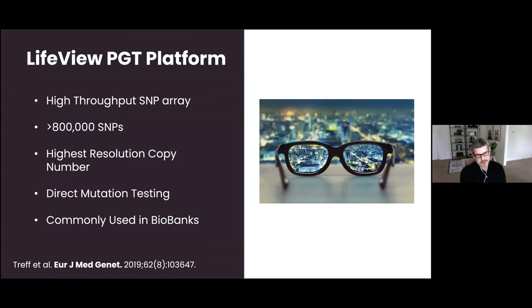Our platform is significantly different from what's commonly used. It's not next-generation sequencing. It's a high-throughput SNP array. We look at over 800,000 positions in the genome, which gives us the highest resolution for evaluating human embryos currently in the industry. We also have the opportunity to directly measure mutations. And because the platform is commonly used in biobanks, we can establish machine learning algorithms to predict the risk of polygenic disease.